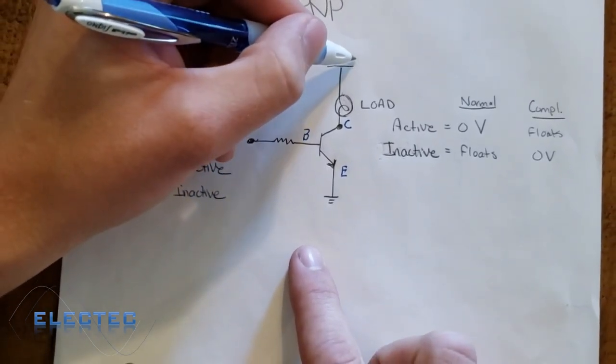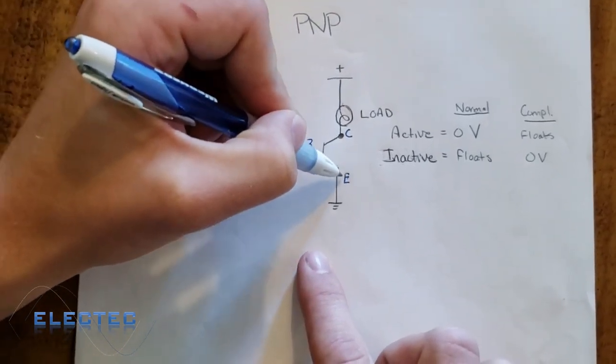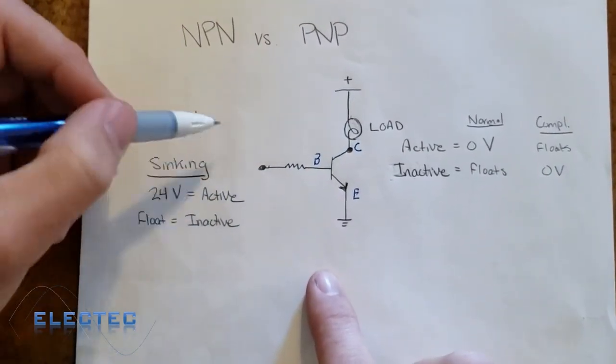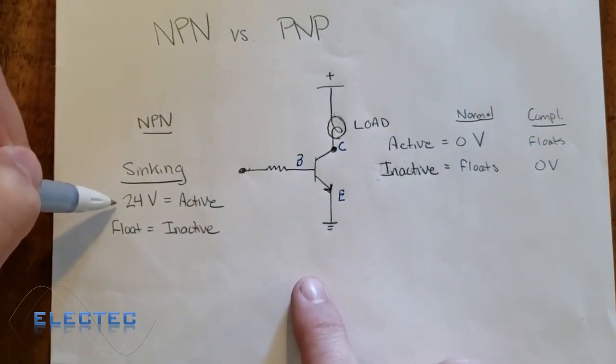So the voltage in conventional current flow, the current would flow from this more positive point to the negative point. It would turn on our load. So if you can think about it, as I have drawn here, to activate an NPN transistor, we need to source it.